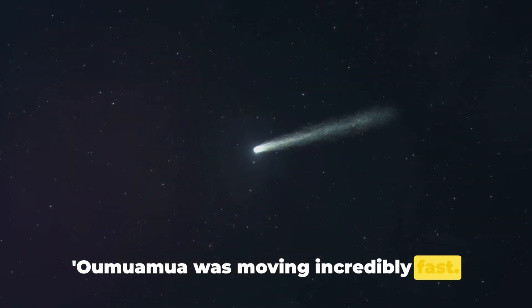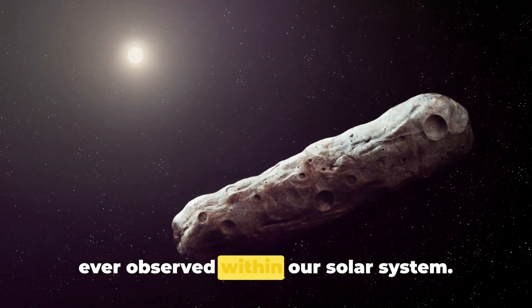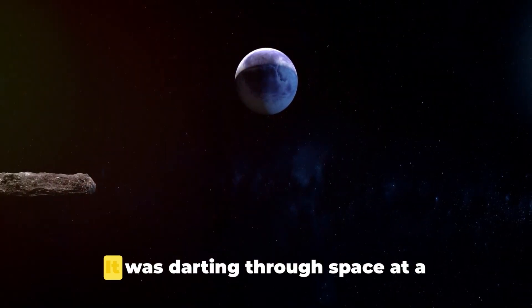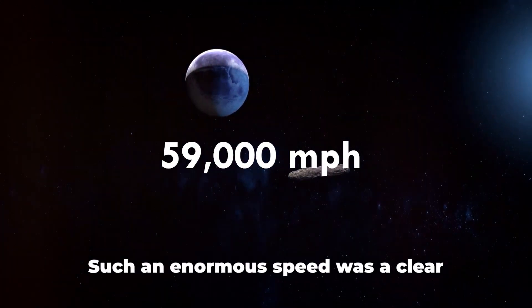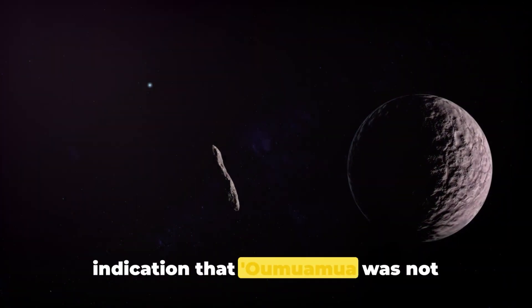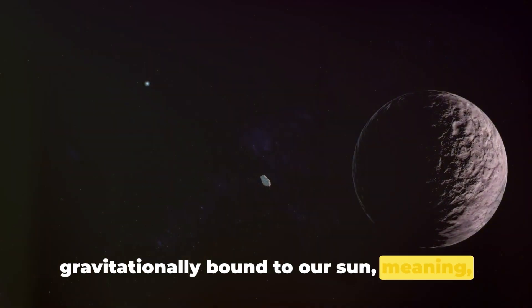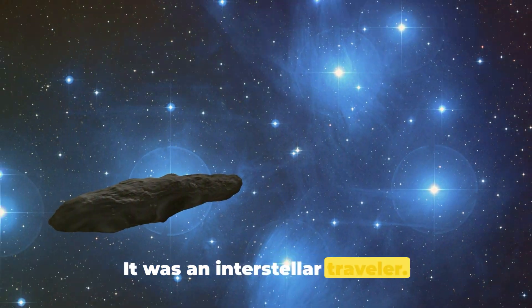Oumuamua was moving incredibly fast, faster than any comet or asteroid we had ever observed within our solar system. It was darting through space at a whopping 59,000 miles per hour. Such enormous speed was a clear indication that Oumuamua was not gravitationally bound to our sun, meaning it wasn't from our solar system. It was an interstellar traveler.